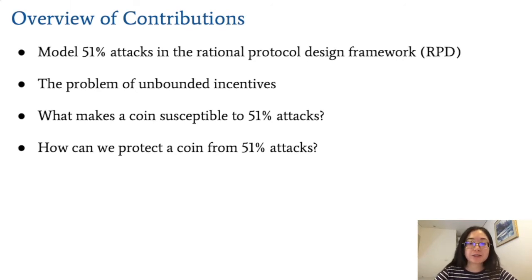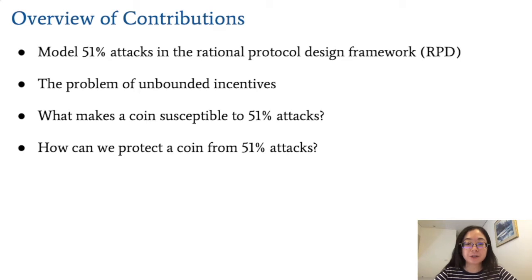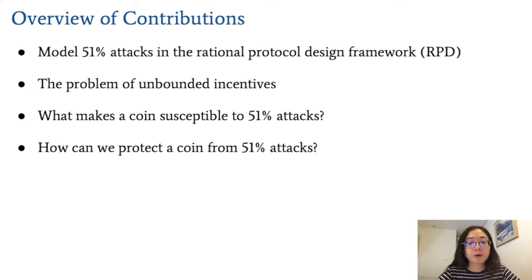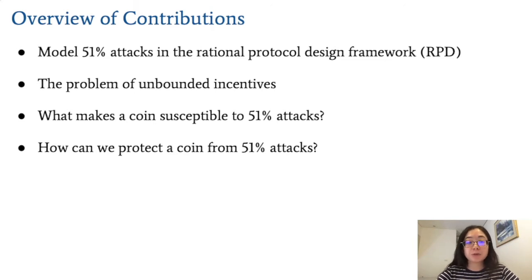Now that we've discussed the problem of 51% attacks, I will quickly go over an overview of our contributions. First, we model these 51% attacks in a rational framework called RPD. Then we'll discuss and solve a problem with previous work in RPD, which is what we call unbounded incentives. Third, we'll discuss what makes a coin susceptible to these 51% attacks. And finally, how we might protect these coins from these attacks.